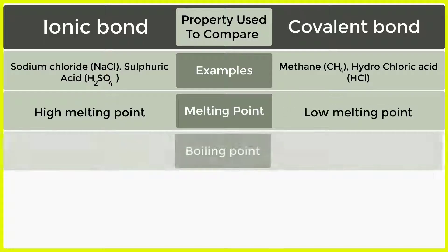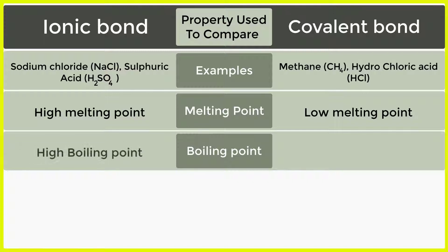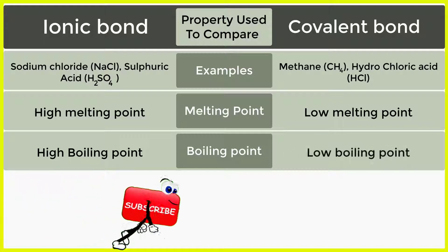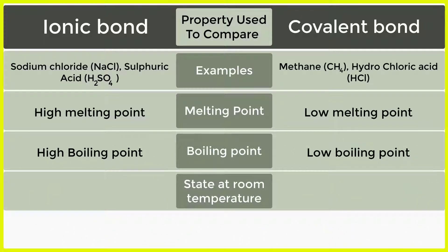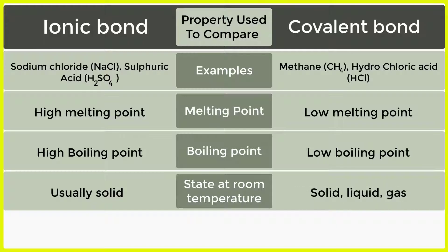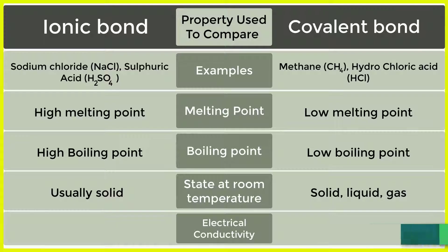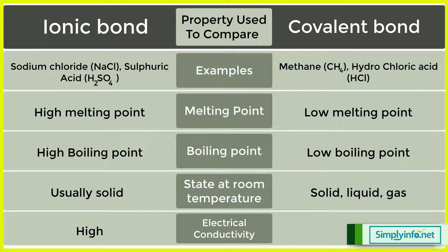Melting point — Ionic bond: high melting point. Covalent bond: low melting point. Boiling point — Ionic bond: high boiling point. Covalent bond: low boiling point. State at room temperature — Ionic bond: usually solid.